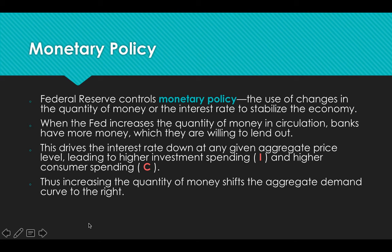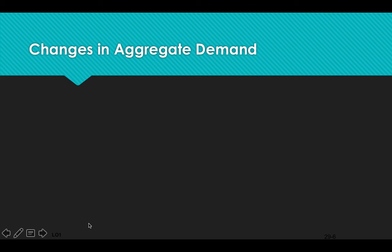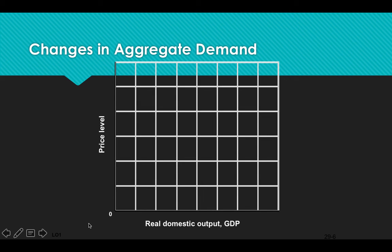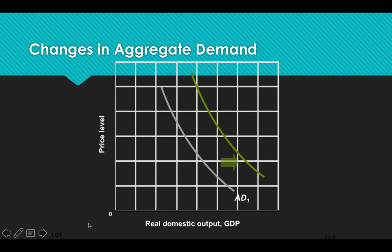So, increasing the money supply lowers the interest rate, increases investment, increases spending, and will shift aggregate demand to the right. Let's look at the graph. Proper labeling, as always, is extremely important. You have price level on the vertical axis and real GDP — real output — on the horizontal axis. You have your downward sloping demand curve, and increases in aggregate demand will shift to the right, which increases output. Shifts to the left will decrease aggregate demand.